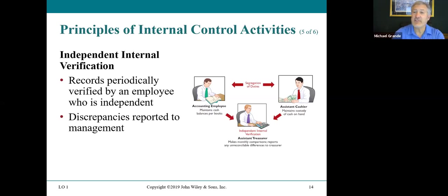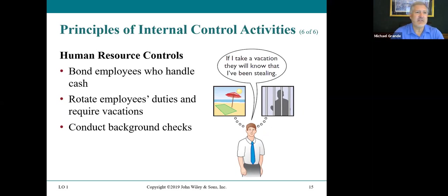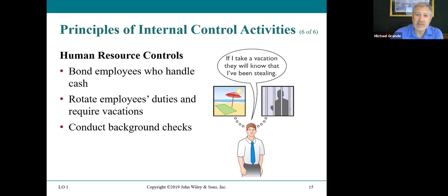Human resource controls include: bonding employees who handle cash — that's insurance paid for an employee who handles cash in the event something happens; rotating employee duties and requiring vacations so one employee doesn't do the same task all the time; and conducting background checks. If somebody's handling cash or responsible for significant assets, you want to make sure that employee doesn't have a record of larceny.